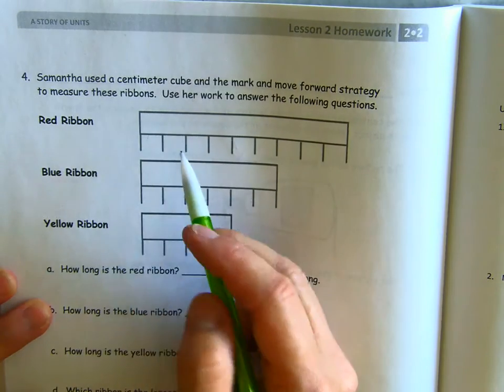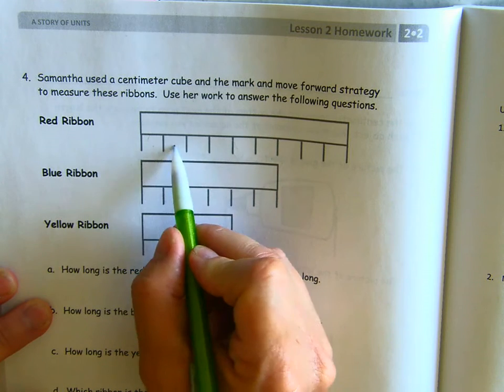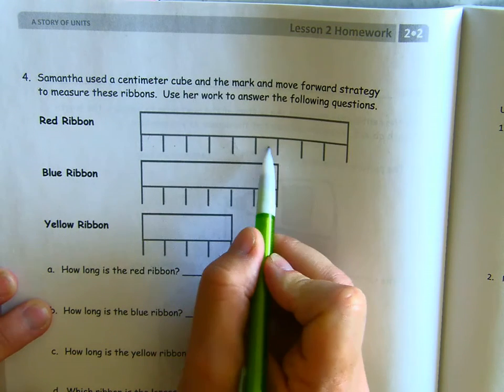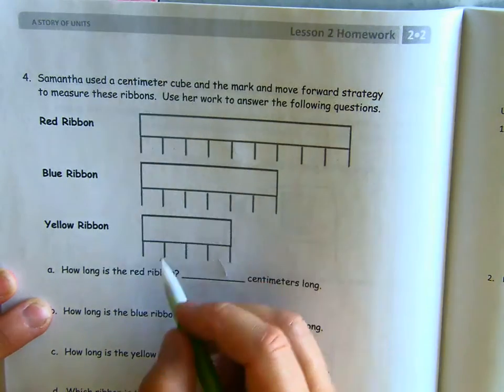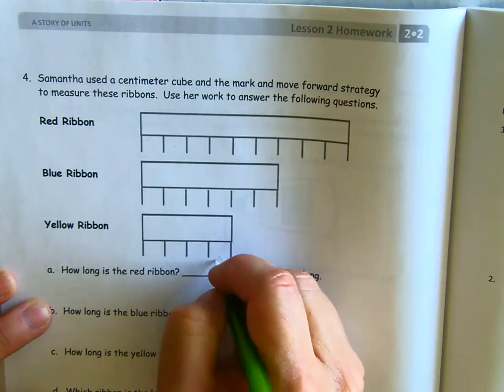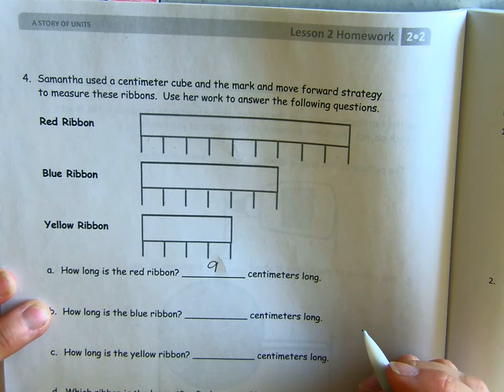So, let's go up to the red ribbon and we can just count. One, two, three, four, five, six, seven, eight, nine. The red ribbon is nine centimeters long.